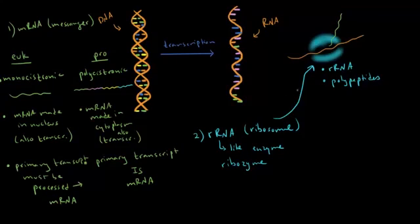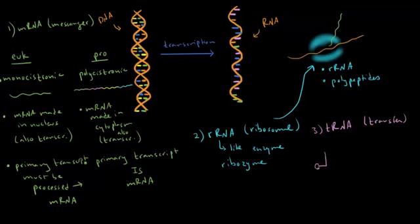The last type of RNA is tRNA, where t stands for transfer. Transfer RNA has a 3D structure that looks a bit like a clover. The job of tRNA is to carry amino acids and bring them to the ribosome so the ribosome can put together a polypeptide chain.